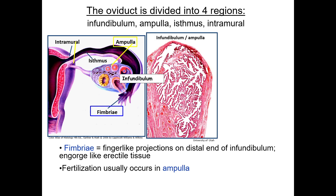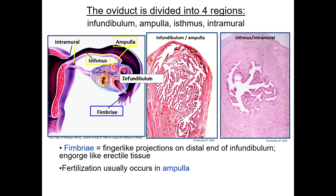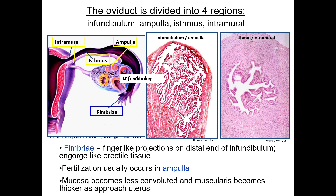The ampulla is an expanded central region where fertilization normally occurs. Histologically, the ampulla and infundibulum are indistinguishable, similar to the body and fundus of the stomach, with the most elaborately folded mucosal extensions that can be seen in this H&E stain slide. The isthmus is the narrow proximal region near the uterine wall, while the intramural or uterine portion passes through the uterine musculature and opens into the uterus. The mucosa of both the isthmus and intramural portions becomes much less convoluted, while the thickness of the muscularis increases.